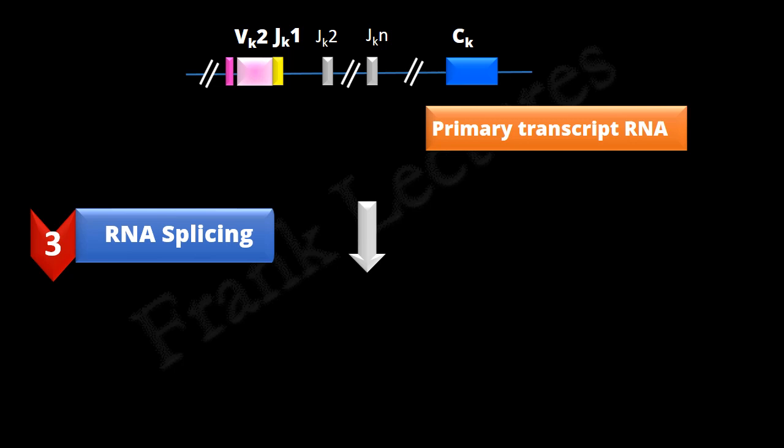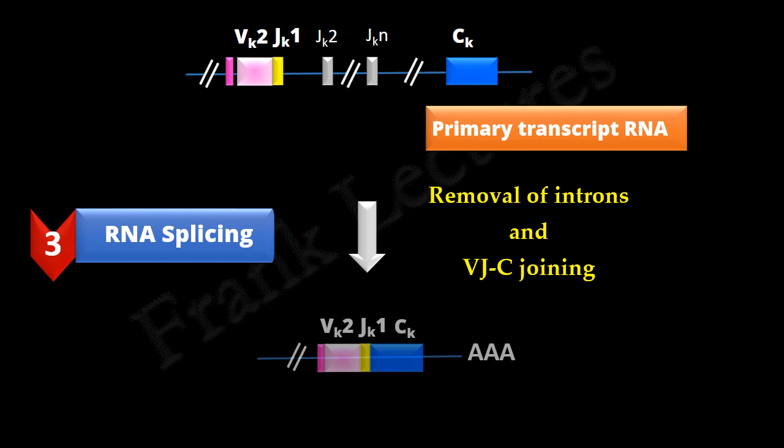In the third step, RNA splicing takes place. The introns are removed, and the variable region exon is joined to the C region exon. That is, exon formed by the V and J gene segments is joined to the C region exon. The triple A sequence in the end represents polyadenylation. And thus mRNA is produced.